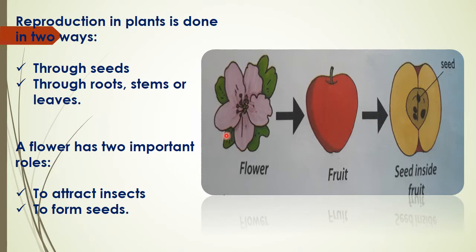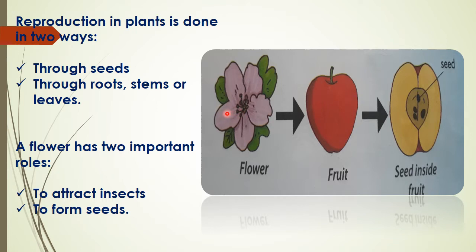If you look at the plants around you, you will notice that some plants bear flowers and some do not. Flowers have bright colors and nice smell. Some of these flowers turn into fruits. Some fruits like apples, oranges and watermelons have seeds inside them. We sow seeds in the soil from which new plants grow. But have you ever wondered why some plants have flowers while others do not, or how plants grow which bear fruits without seeds?